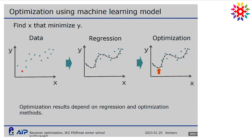This is a typical structure to solve the inverse problem using a machine learning model. First, we have a dataset. Then we perform regression using a machine learning model. Using this machine learning model, we can obtain the optimized condition. It should be emphasized that the prediction speed of machine learning is very fast, so we can obtain this condition in a very short time. This is the advantage of machine learning application.